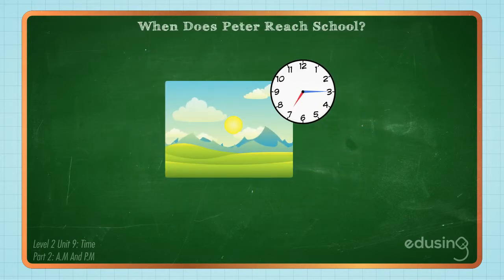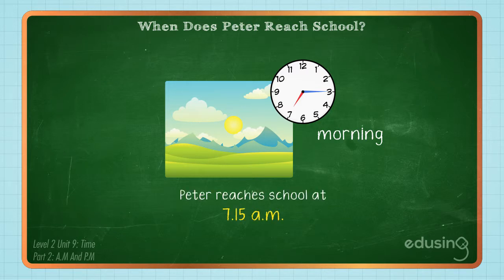Peter reaches school at 15 minutes after 7 o'clock in the morning. We say that Peter reaches school at 7.15am.